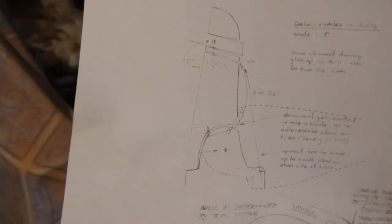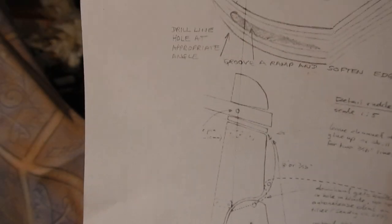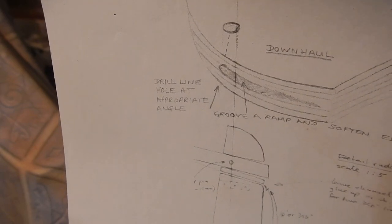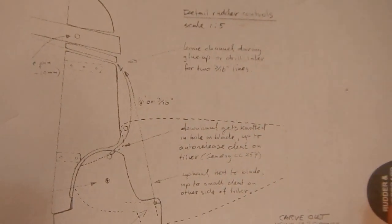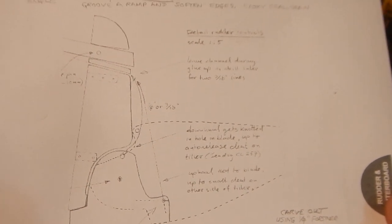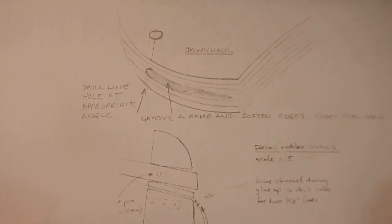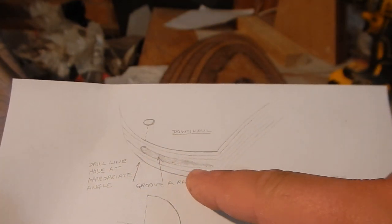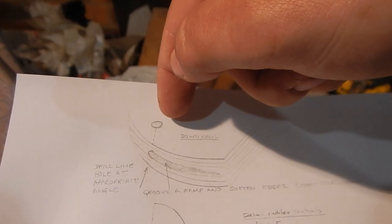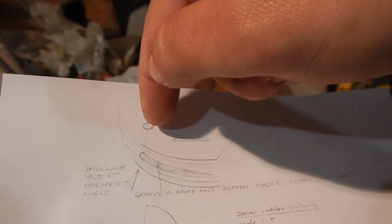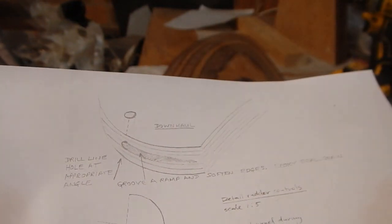Maybe I'll have to do some investigations. Well it says here, downhaul gets knotted in hole in blade, uphaul at least cleated on tiller. Hmm, I think that means that I have a groove here and a hole perpendicular to the surface here, going down about halfway and then sort of drill a channel in there.